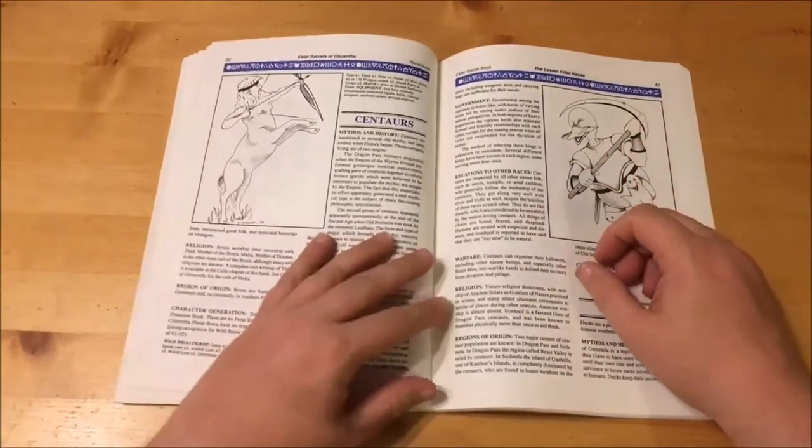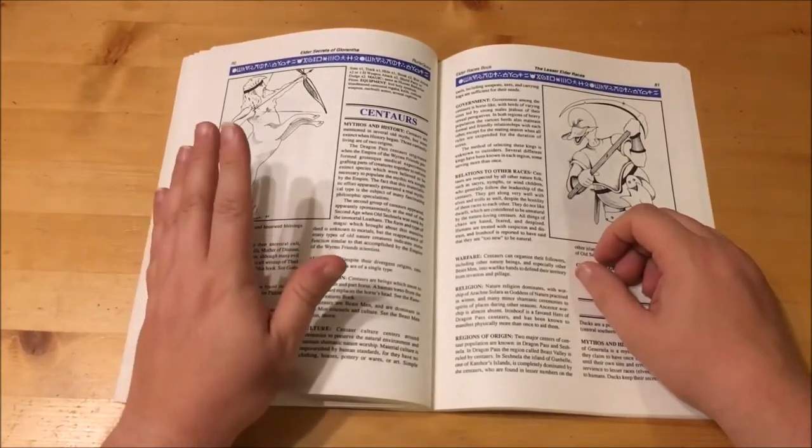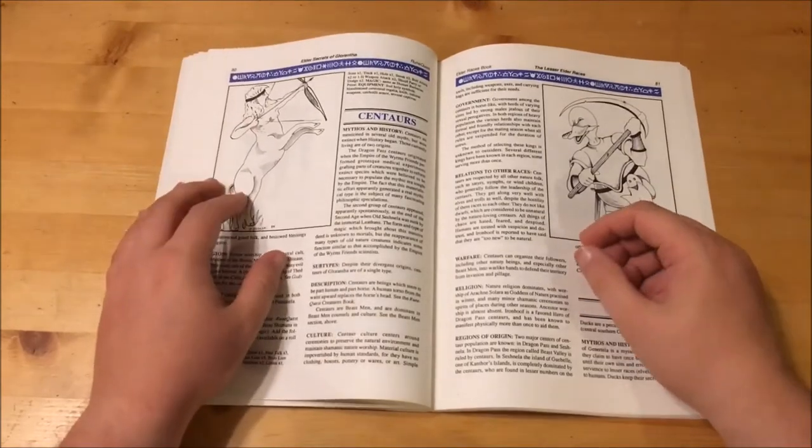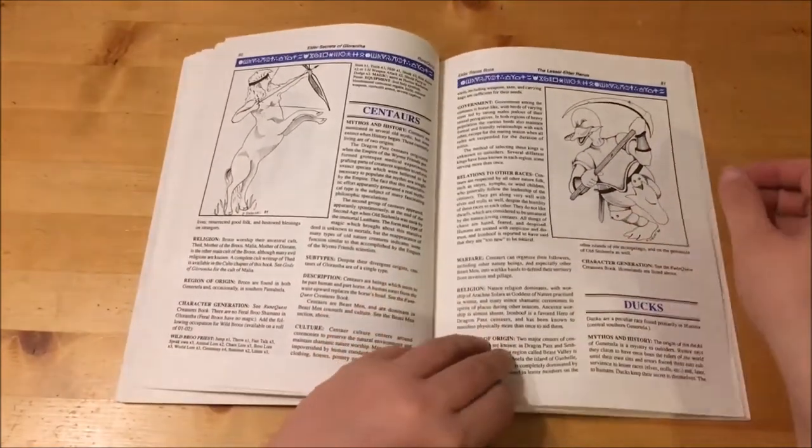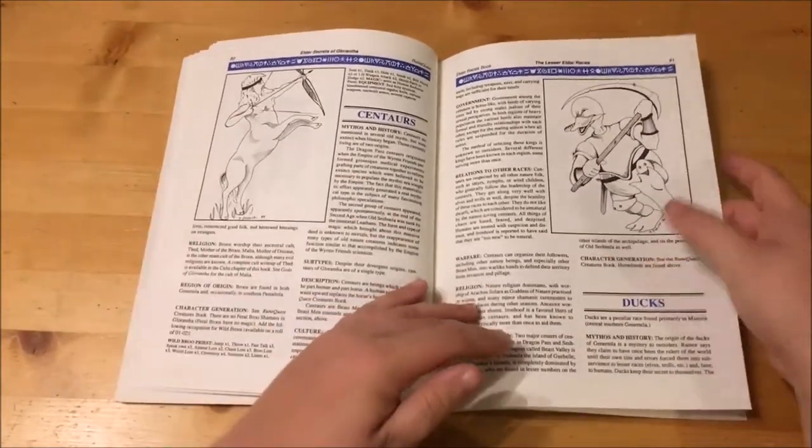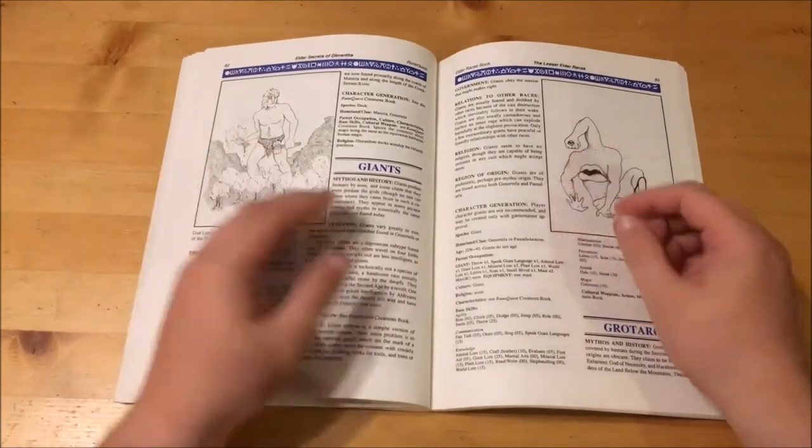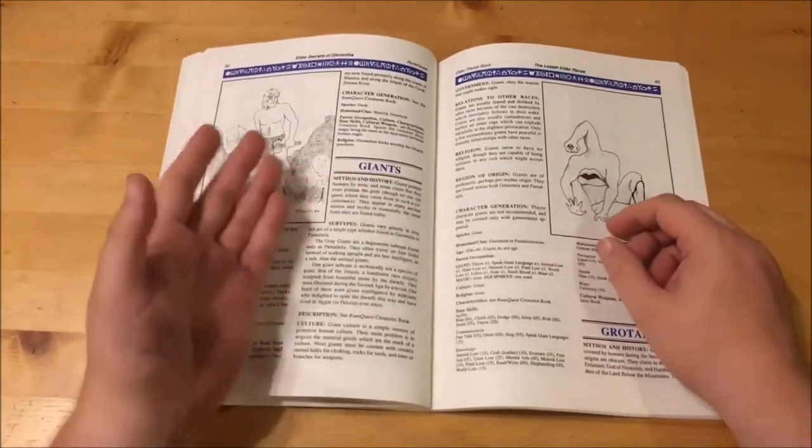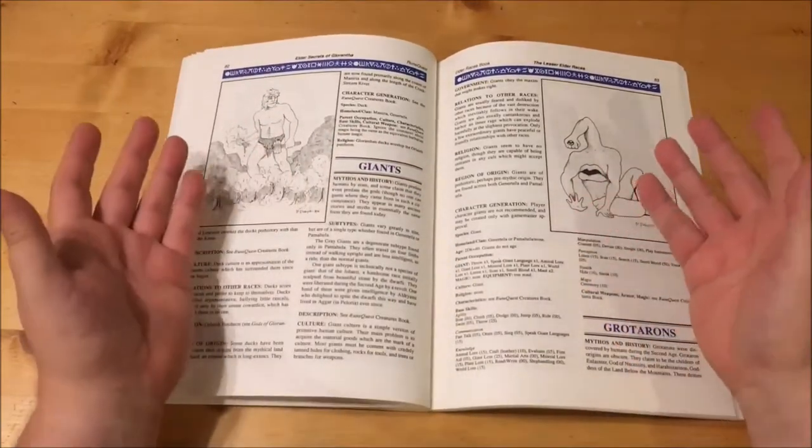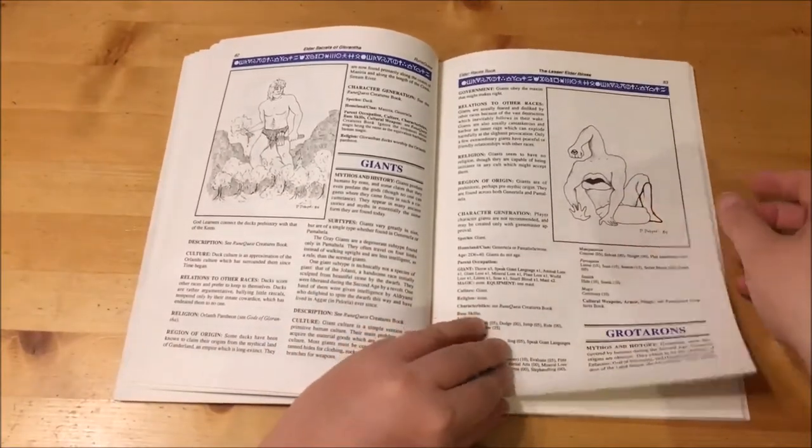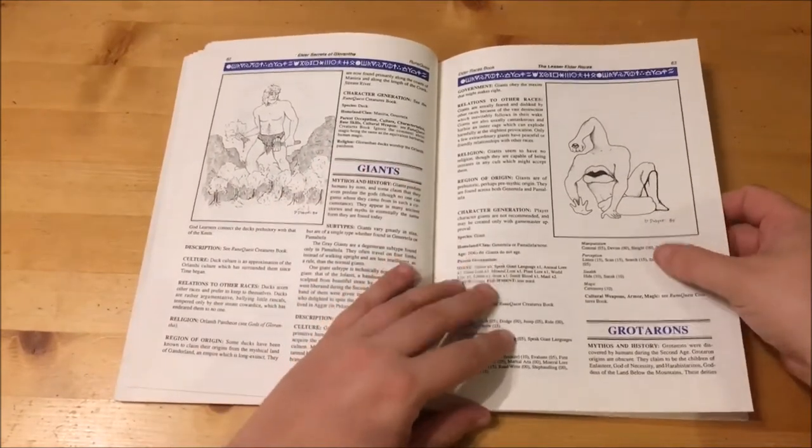Centaurs are next up. Oddly, centaurs are included separately from Beastmen while still being mentioned. When history began, centaurs were already extinct. The current living ones were either the result of grotesque experiments by the Empire of Wyrm Friends or those that appeared at the end of the Second Age when old Seshnella was sunk. As expected, they are herd-like in nature and respected by all other nature folk. They generally worship Arachne Solara. Next up are ducks. Their origin is shrouded in mystery. They tend to worship the Orlanthi Pantheon and some claim their origins are the mythical land of Ganderland. Giants are next. In Glorantha, giants predate humans and some claim they even predate the gods themselves. There are grey giants that are a degenerate race and the Gelanti, a handsome race that look like they are sculpted from stone. They seem to have a fairly primitive culture where might equals right. They are, as you would expect, generally feared by other races and do not appear to be religious. Included are rules for creating giant characters.